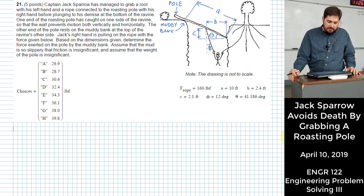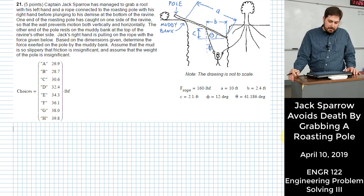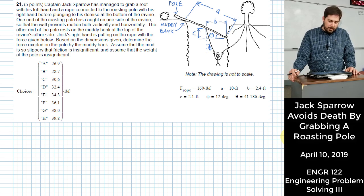Jack's right hand is pulling on the rope with the force given below. Based on the dimensions given, determine the force exerted on the pole by the muddy bank. Assume that the mud is so slippery that friction is insignificant and assume that the weight of the pole is insignificant.